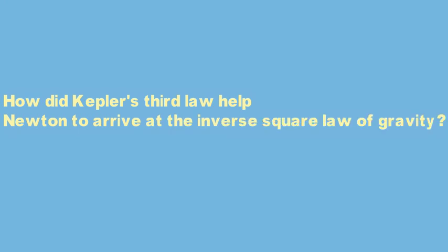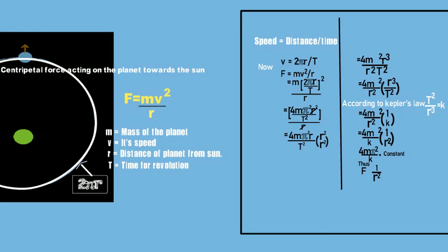Newton identified this force with the force of gravity and hence postulated the inverse square law of gravitation. So students, there is one important question: How did Kepler's third law help Newton to arrive at the inverse square law of gravity? And this is the full answer for this question.